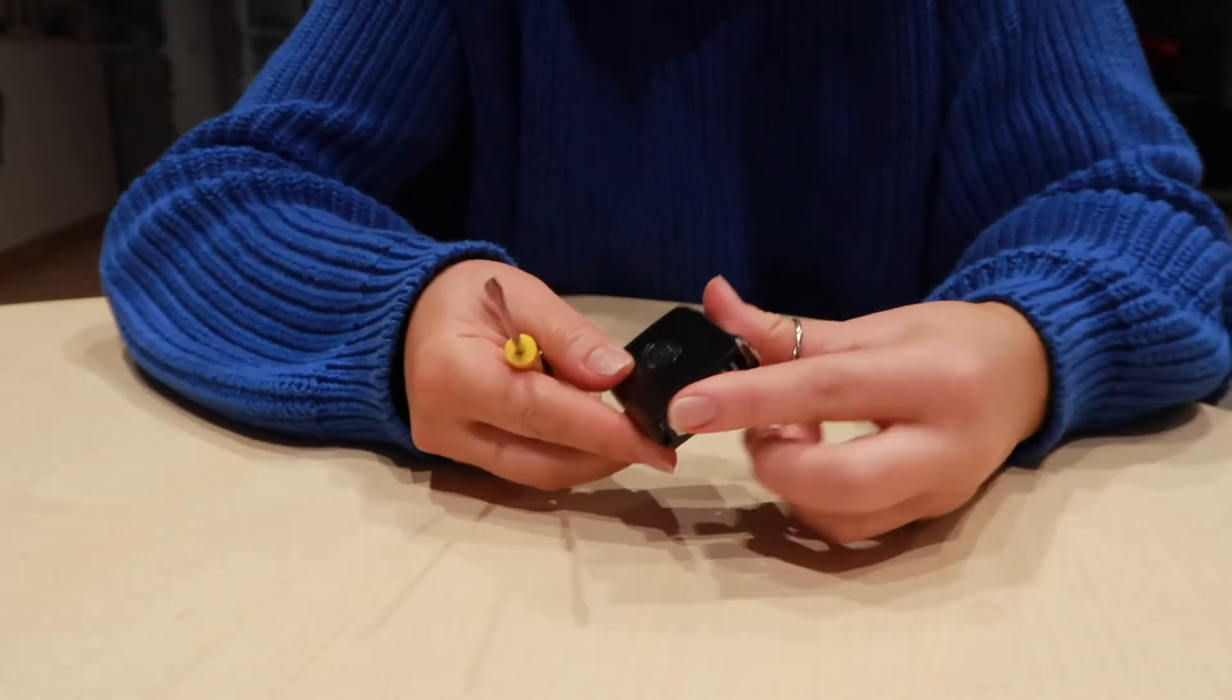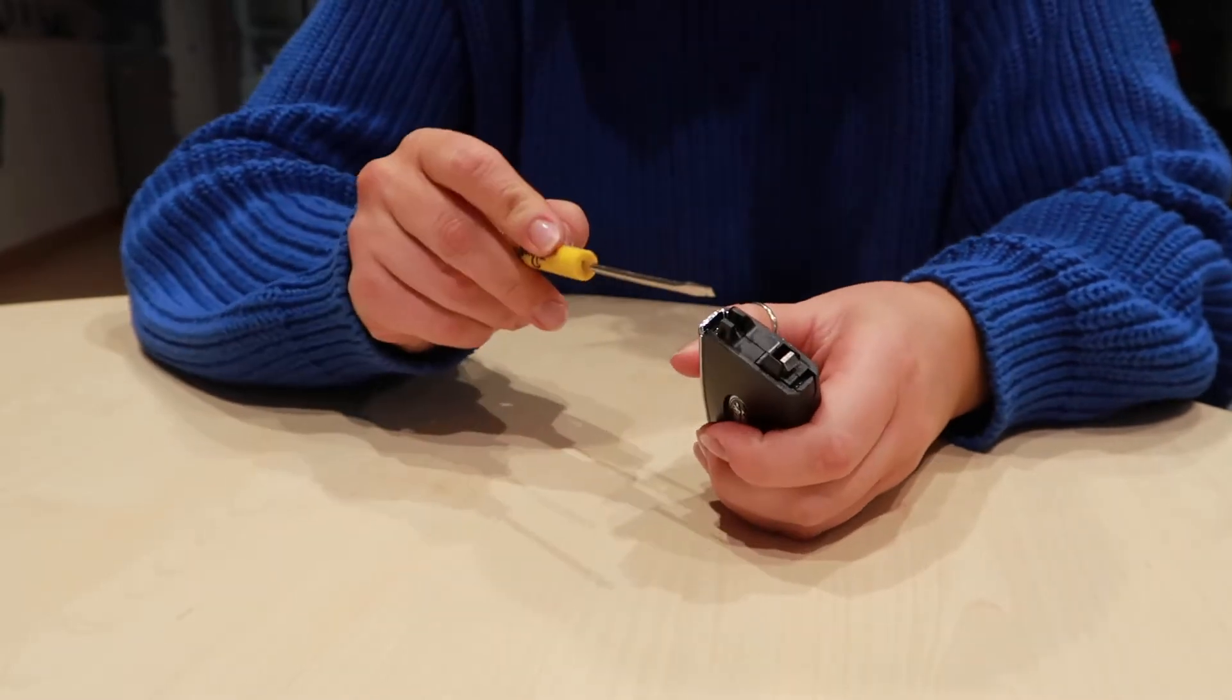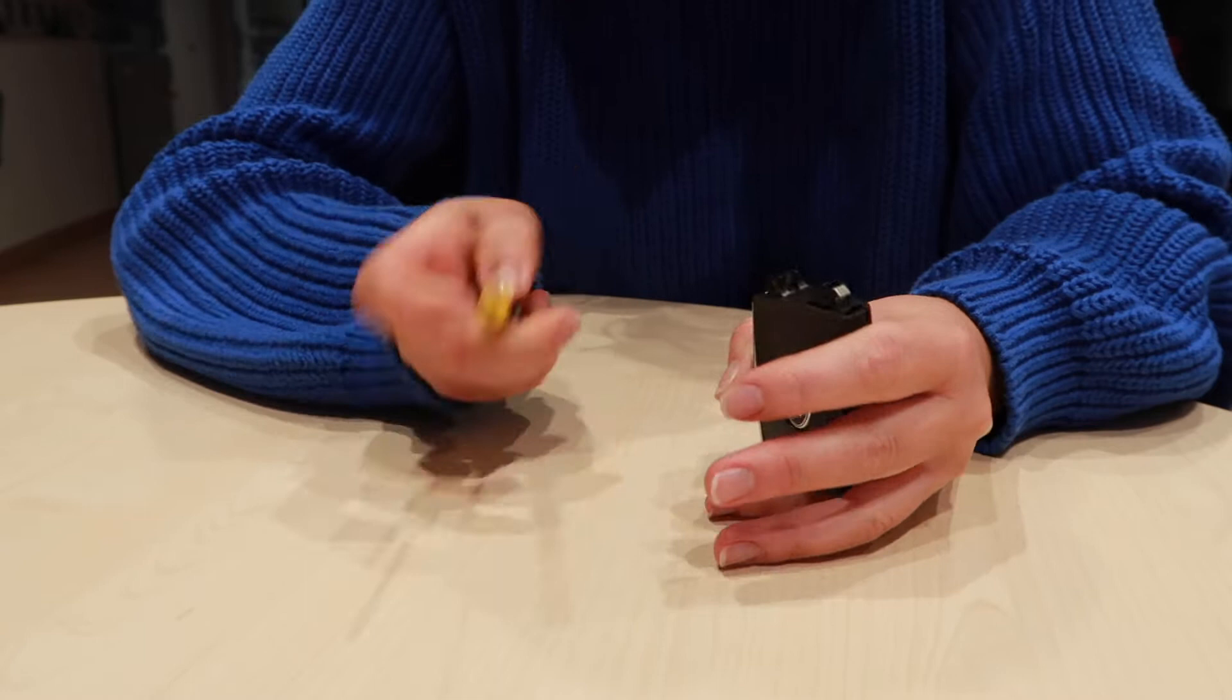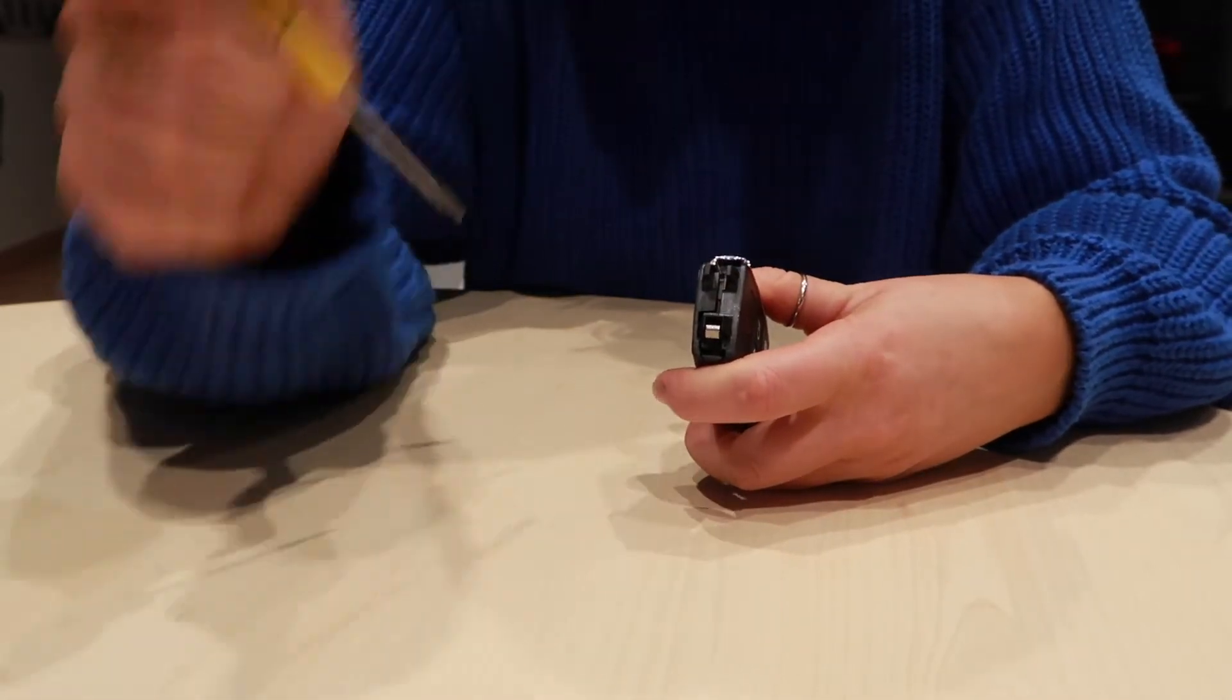Then you're looking here at the inside of the key. You're going to leverage with these two prongs and your flathead screwdriver until you hear a little bit of a pop. As you can see you now have that side open.